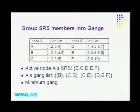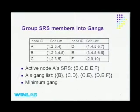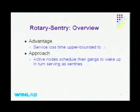Knowing this, we try to group the sensing redundant set members into gains. A gain consists of nodes which collectively can fully cover the target node. In this example, A's sensing redundant set is B, C, D, and F. A's gain list is: {B}, {C, D}, and {D, F} — because B alone can cover 100% of A's area, and C and D together can cover all the grid points A covers, as can D and F together.